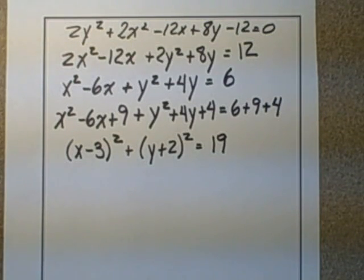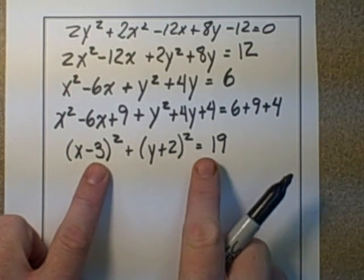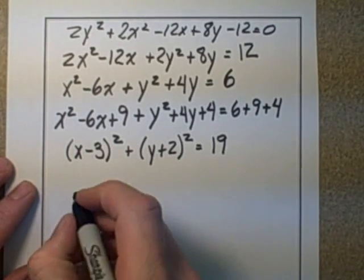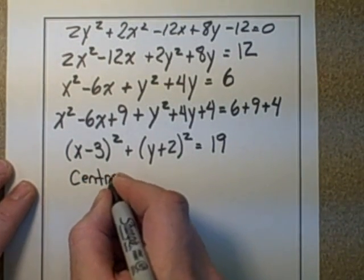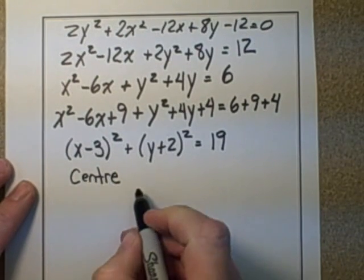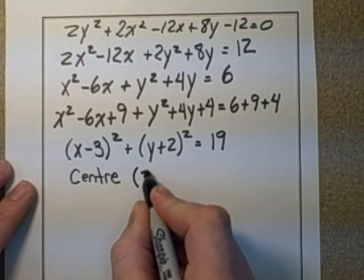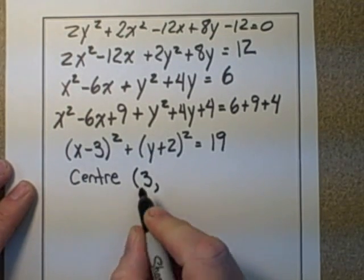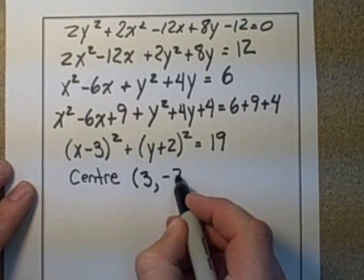Now we can analyze it because we know what each of the representative terms would be. Here's our h and k. There's our r squared. So for our center, h is negative 3. So opposite of that, it's going to be 3 because there's a negative 3 in there and a positive 2. So it's going to be (3, -2) for the center.